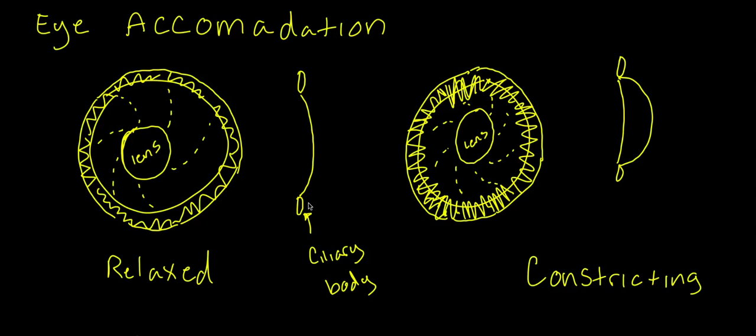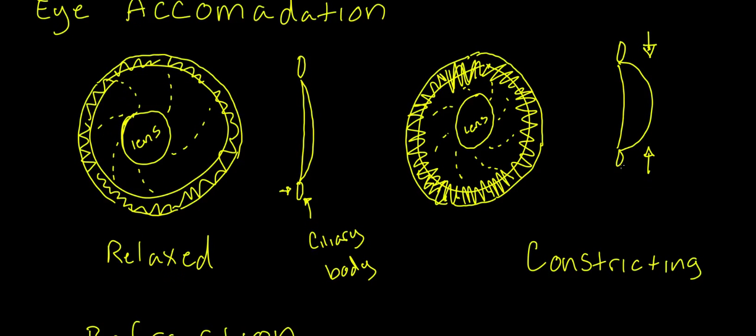You have these ciliary bodies that we covered in the previous video. When they constrict or pull, they'll widen the lens. When they don't pull, when you have no light, the ciliary body will relax and your pupil will get super dilated, trying to let as much light in as possible. When they're constricting, they're pulling the iris tighter and leaving only a small opening for light to pass through, so it will squeeze the lens. That's all eye accommodation is.